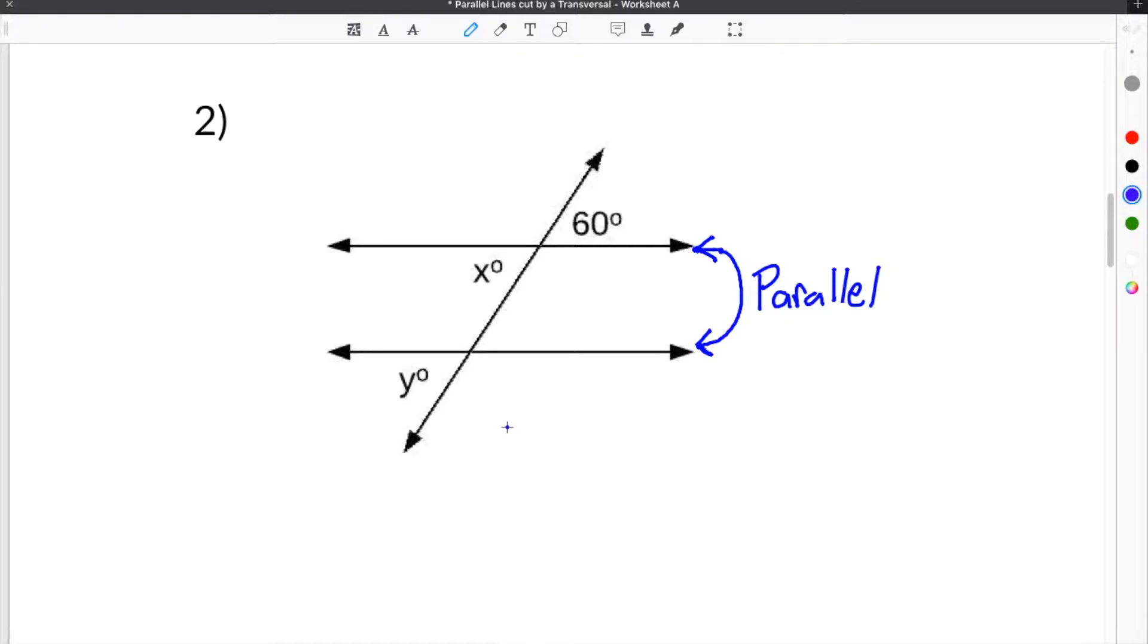Then, the line that does cross them is called the transversal, which is this part right here. So when we talk about parallel lines, we're talking about these lines here, and then the line that goes across the parallel lines is the transversal.